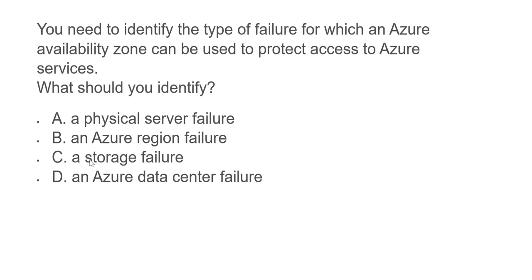Option C says a storage failure. A storage failure is hardware within your data center, similar to option A. If there's a hardware failure it would not switch to a different AZ — it would switch to different hardware within the same AZ. So C also cannot be the option. Option D states an Azure data center failure, which seems to be the right option. If one data center fails and that data center is an AZ, the switchover will happen to a different AZ.